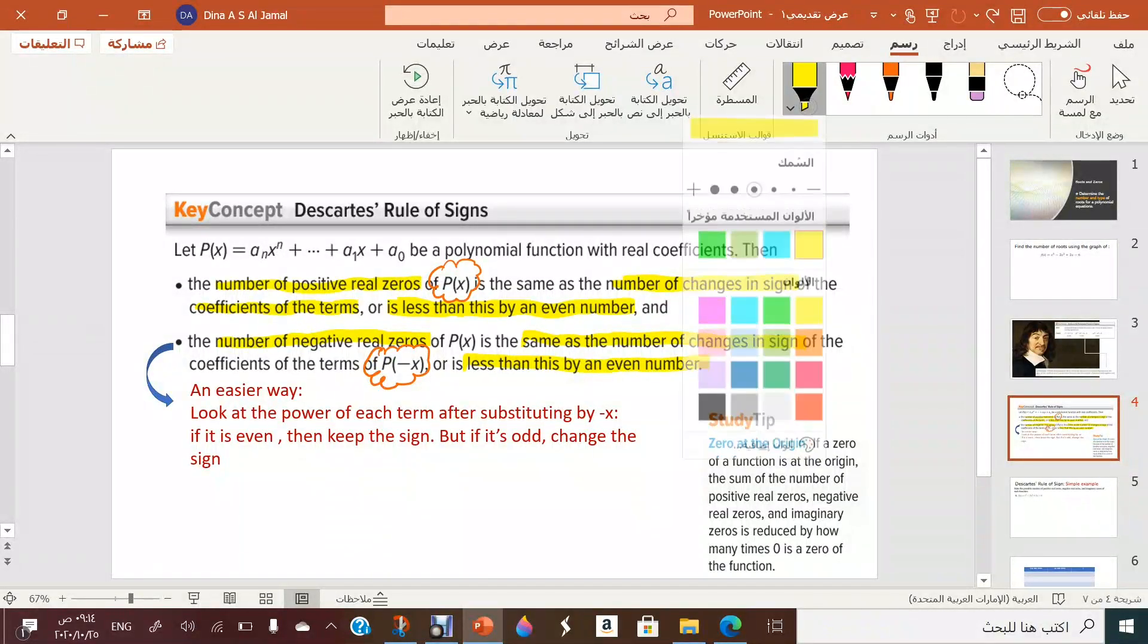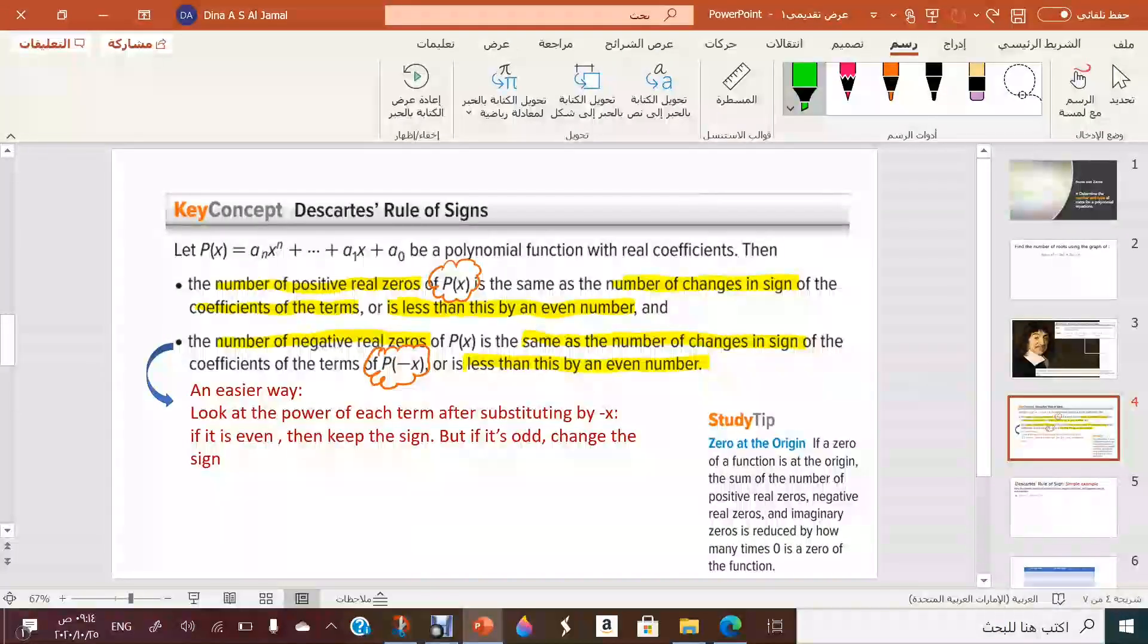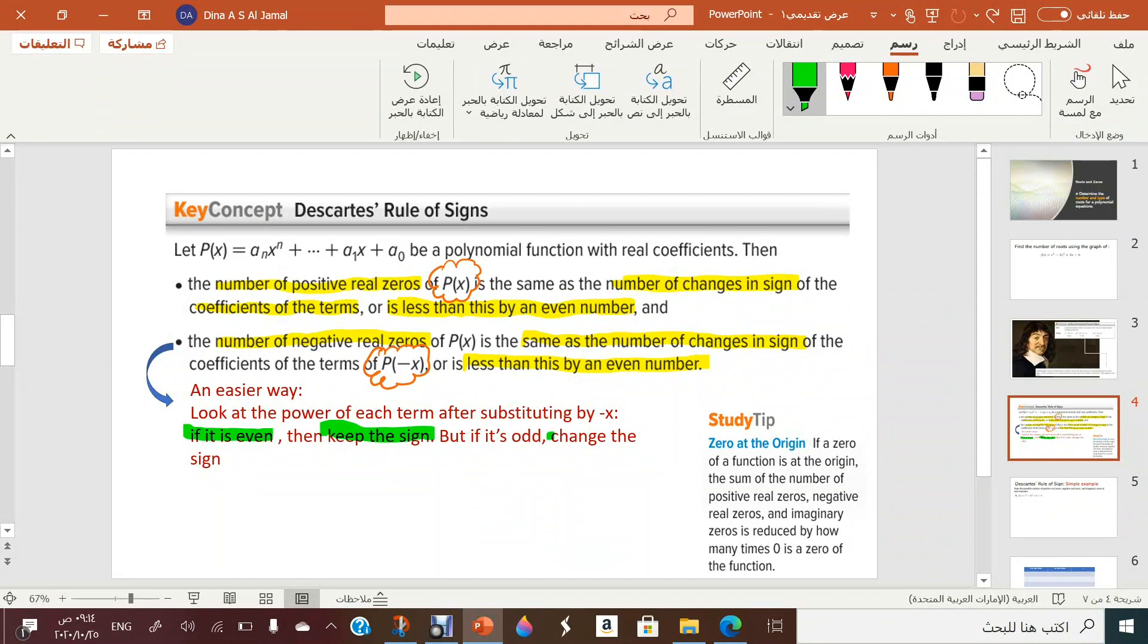So an easier way to do this is when you plug minus x inside the polynomial itself. Look at the highest power of the term that you are doing the sign change for. If it is even, then keep the sign and do not change it. If it is odd, then change the sign after plugging minus x. Now you can pause, read it again, try to understand it.